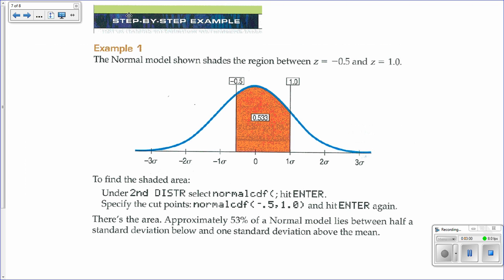Pay attention to the step-by-step examples in this section. They're really powerful. I'll just highlight two of them here, using normal CDF to find the likelihood of having something happen between a half standard deviation below the mean and one standard deviation above the mean.